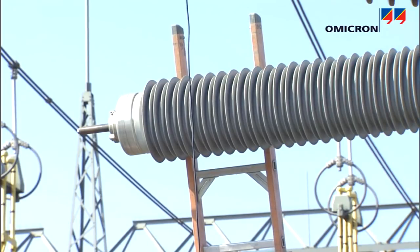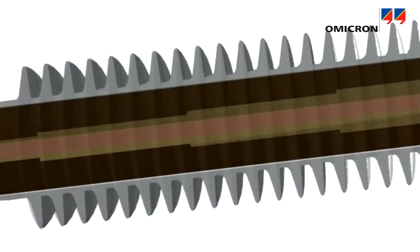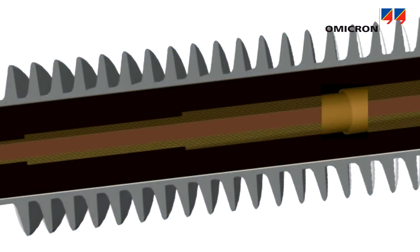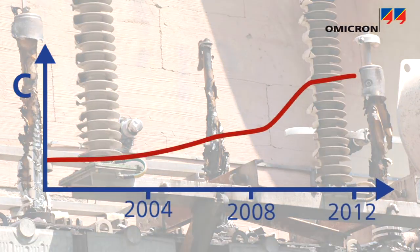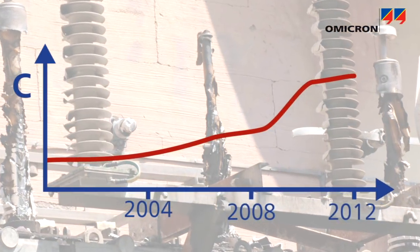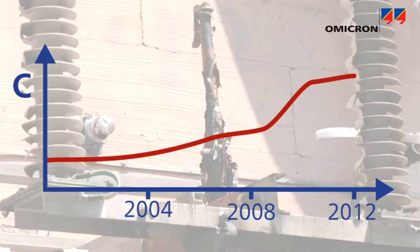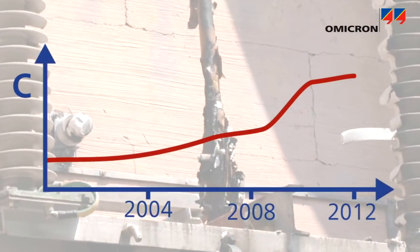Capacitance values of bushings show if there have been breakdowns between capacitive layers. A rise in capacitance of more than 10% is normally considered dangerous.